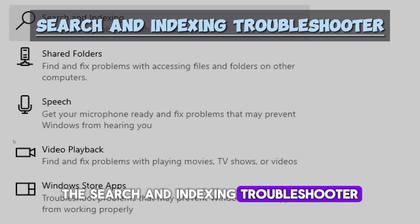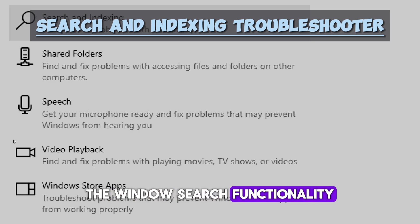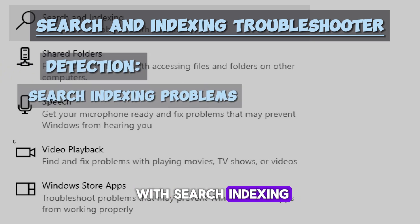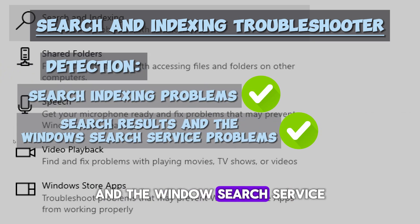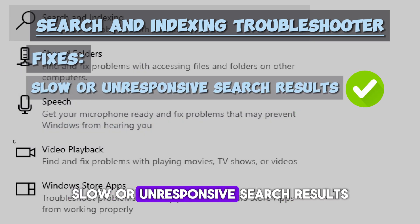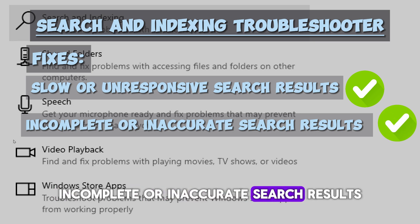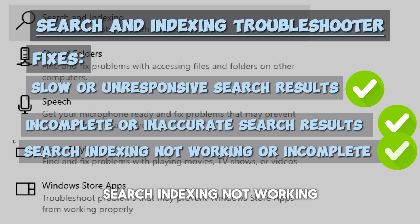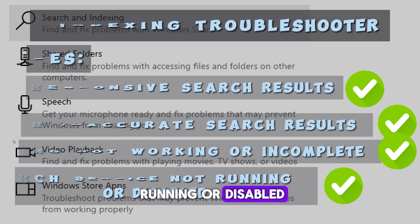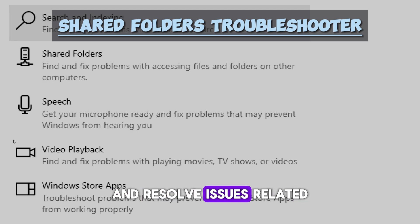The Search and Indexing troubleshooter is designed to diagnose and resolve issues related to the Windows search functionality and indexing service. It can detect problems with search indexing, search results, and the Windows search service. Common issues it addresses include slow or unresponsive search results, incomplete or inaccurate search results, search indexing not working or incomplete, and Windows search service not running or disabled.